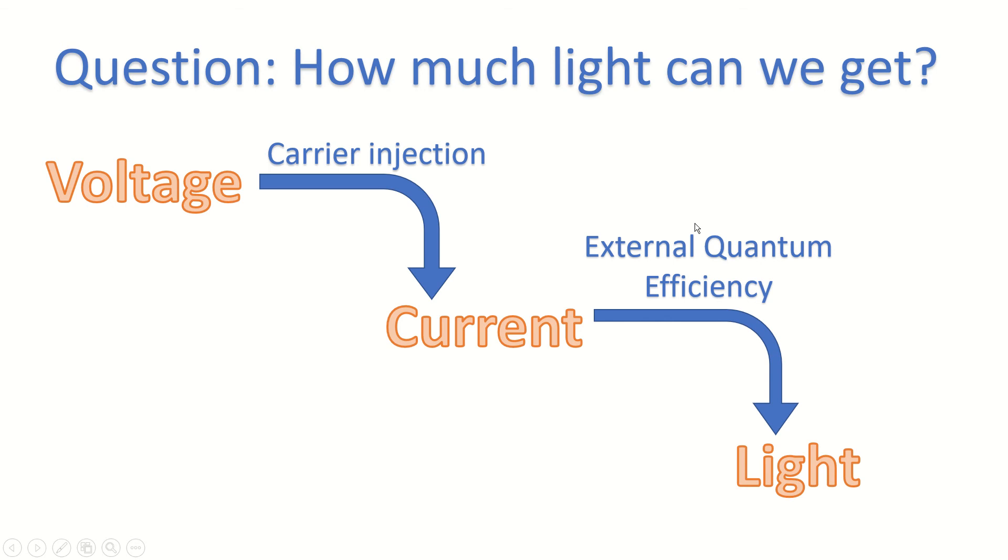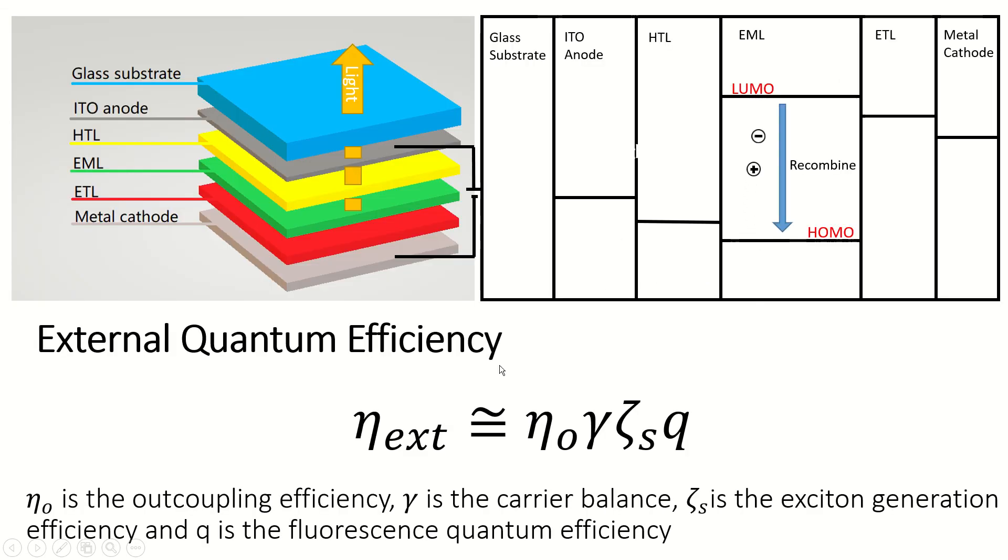After that, we need to calculate the external quantum efficiency. The external quantum efficiency is defined as follows. It can be derived from the coupling efficiency, carrier balance, exciton generation efficiency, and the fluorescence quantum efficiency.